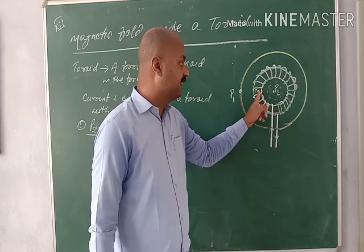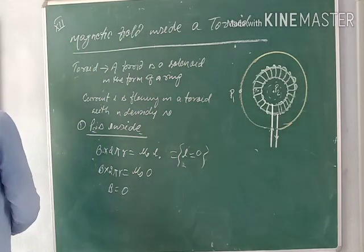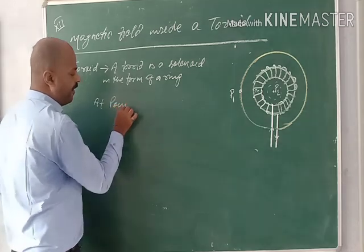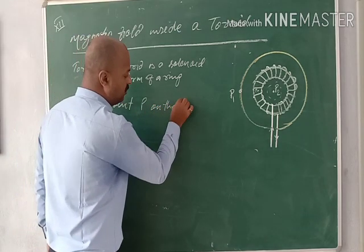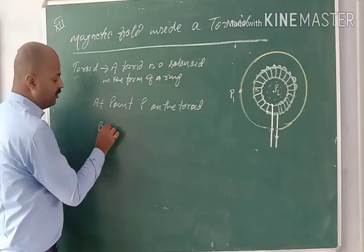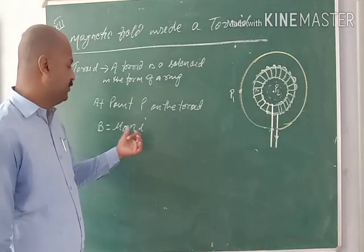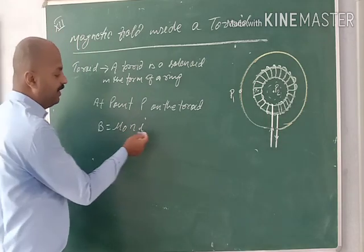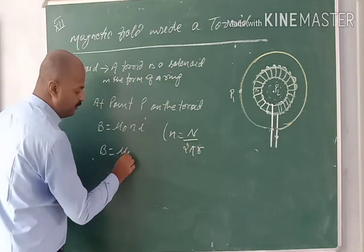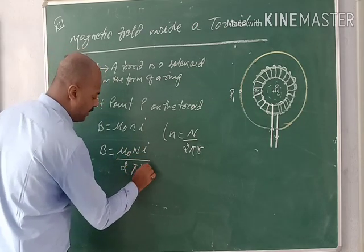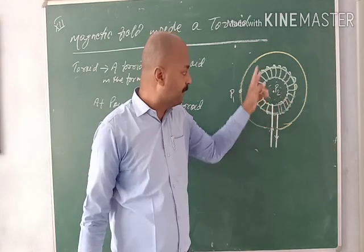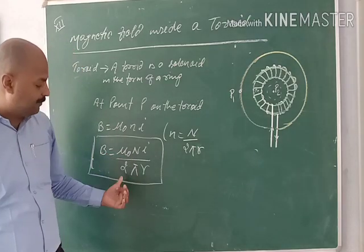Now, what is the magnetic field on the toroid at point P? We have already found that on the toroid, B = μ₀NI, where here N = N / 2πR (the number of turns per unit length). So finally we get B = μ₀NI / 2πR. To summarize: outside the toroid B = 0, inside the toroid B = 0, but on the toroid B = μ₀NI / 2πR.